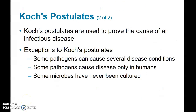The purpose of Koch's postulates is to prove the cause of a particular infectious disease and link it to the specific microorganism. There are some exceptions where Koch's postulates don't work: some pathogens cause multiple disease conditions; some pathogens cause disease only in humans so you can't inoculate a lab animal; and some microbes are extremely difficult to culture in the lab.